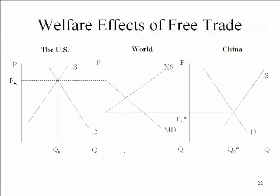Here we've got our autarky situation for the US, our autarky situation for China, and in the middle we've got our import demand and export supply curves for the US and China respectively. So now we can see where that free trade equilibrium is. We want to start in our world trade diagram, which tells us our world trade volume and the world price. That world price we can bring over to the US.